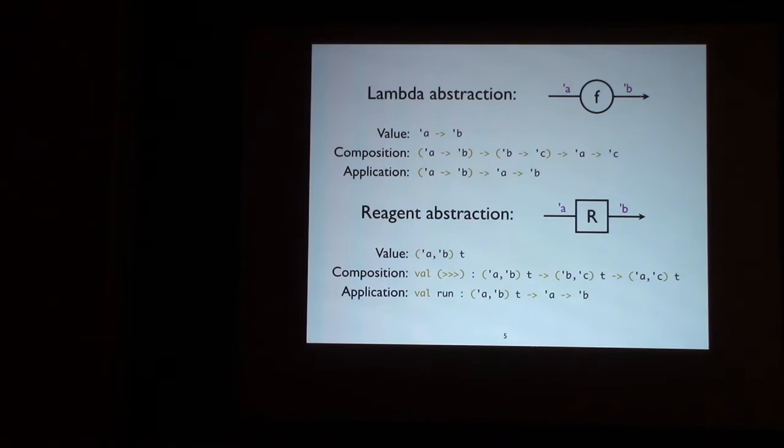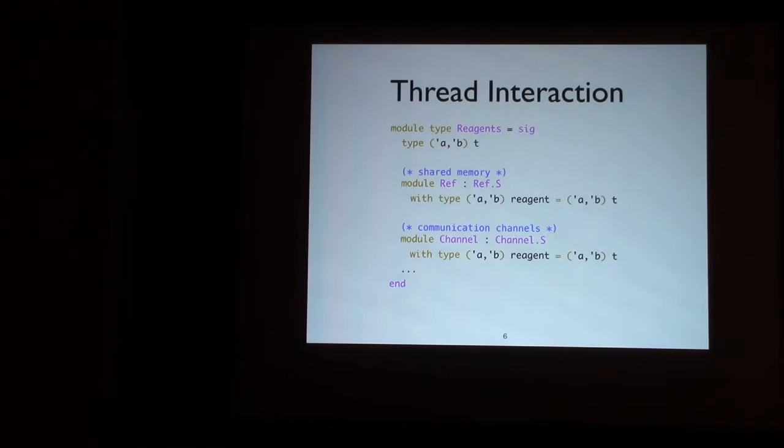So reagents provide you a similar abstraction. They are arrows. And what they represent is an atomic protocol. One thing that you can do with reagents is take two atomic protocols and compose them together to make a larger atomic protocol. You can also run them. The guarantee that you have is any way that you compose these atomic protocols together, you still have lock freedom. When it comes down to thread interaction, there are usually two opposing camps. One argues that you have to do all thread interactions through shared memory references, and another argues that all threads should be actors and they have to exchange messages over typed channels.